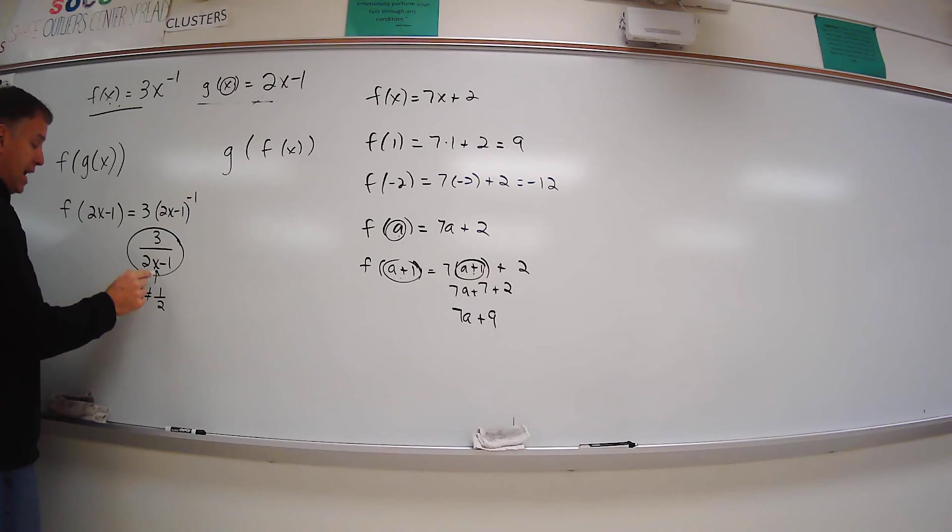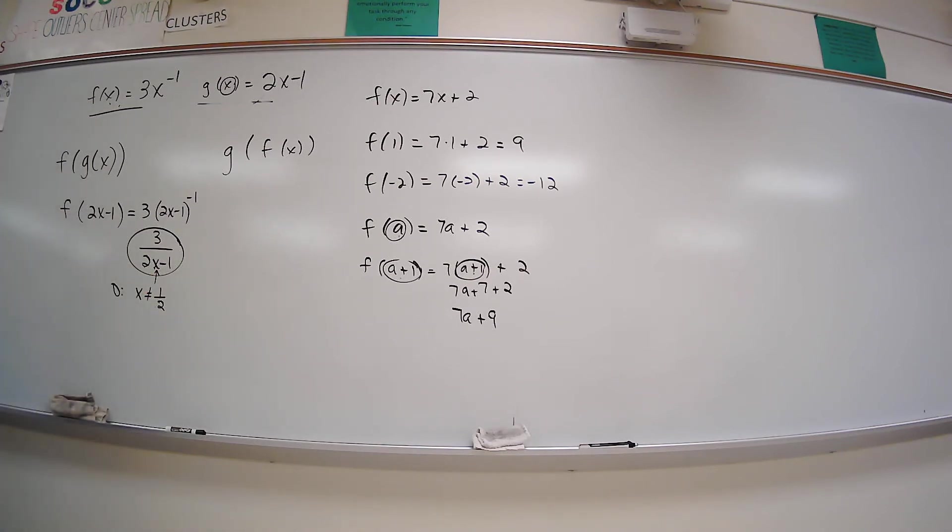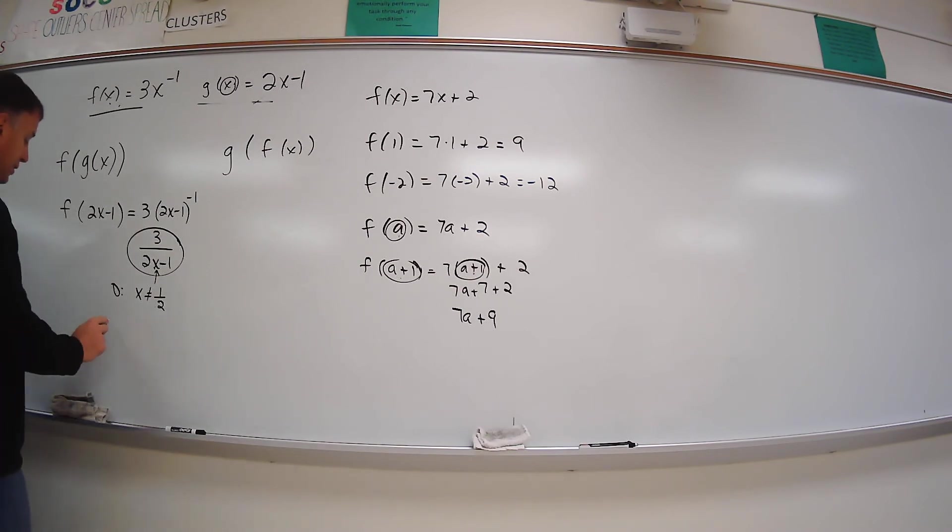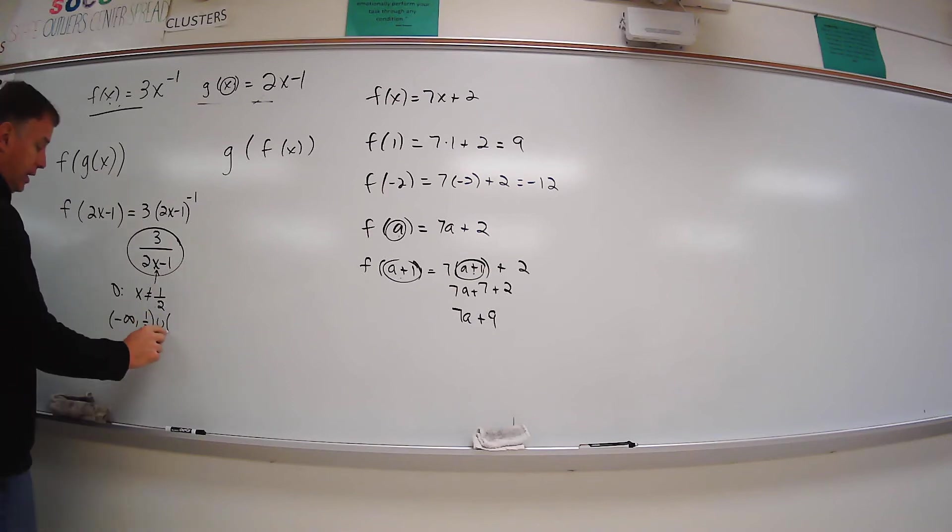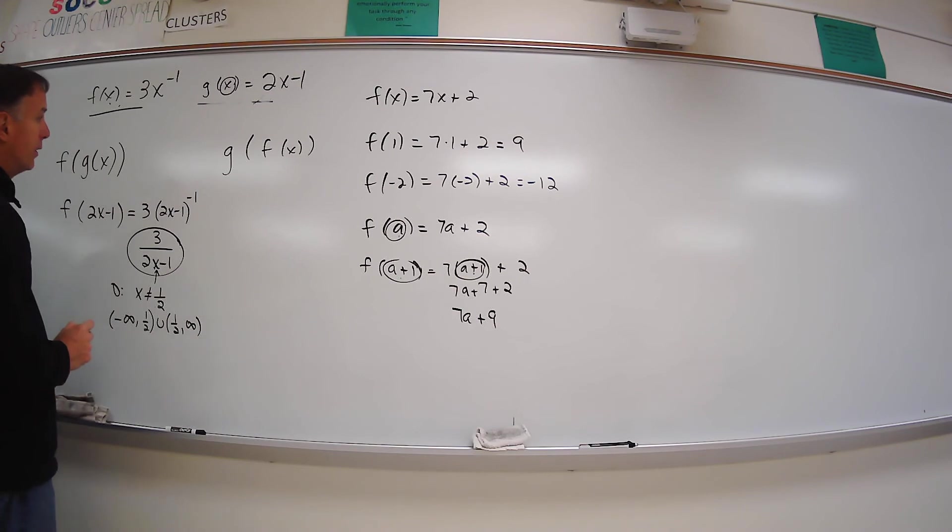So my domain, you could say, is x cannot be a half. You could also say all real numbers except for a half. Or you could write it this way. Negative infinity to a half. The parentheses means we don't include it. And then a half to infinity.